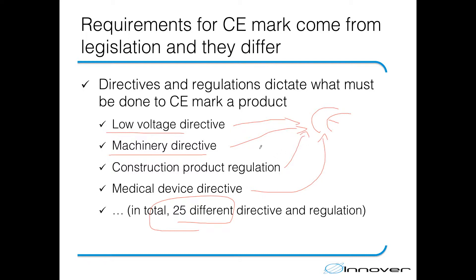In this training we are not going to go into much detail on how to CE mark a low voltage product, machinery, medical device, lift, toy, or any other product besides the construction product. We are going to be concentrating on construction products. But the key point here is that the CE marking symbol is the same across every product group, while how you achieve CE marking varies quite a lot. So if you are good at CE marking machinery, it doesn't mean you know how to CE mark a construction product right away, even though it helps quite a lot.